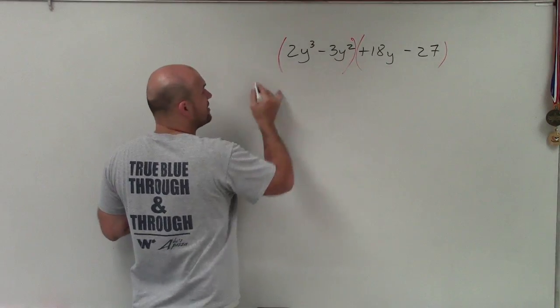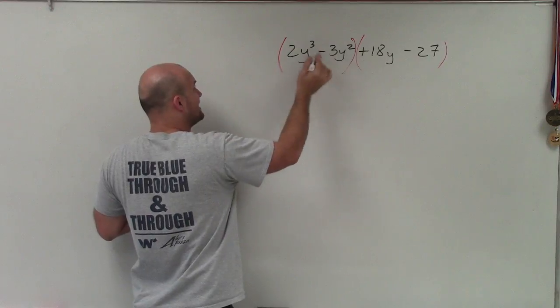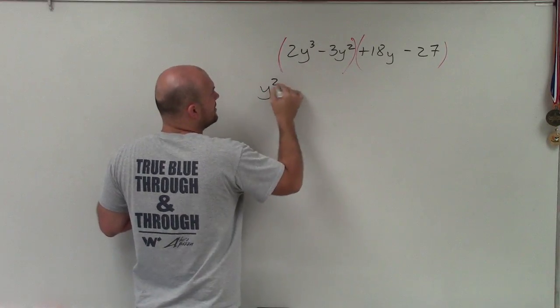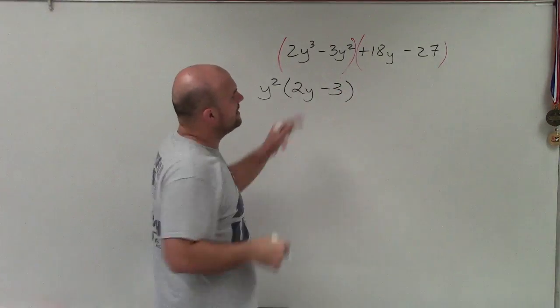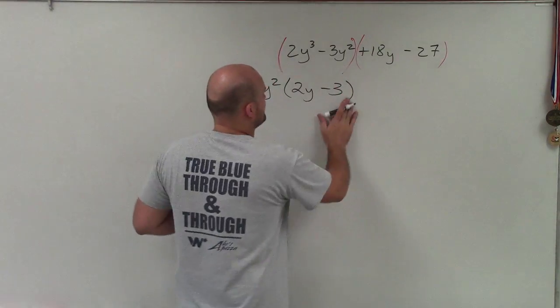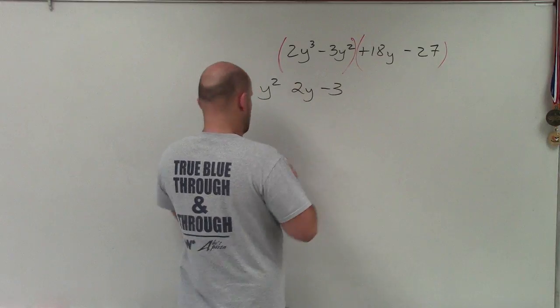So if I factor out a y squared, that's basically like dividing y squared from both these terms. Therefore, I'm left with 2y minus 3. Then I look at, let's write this here.